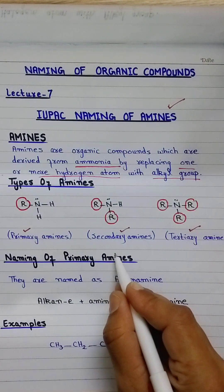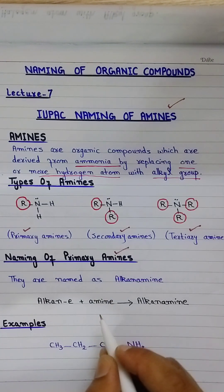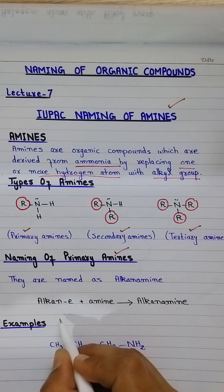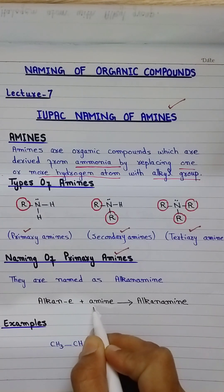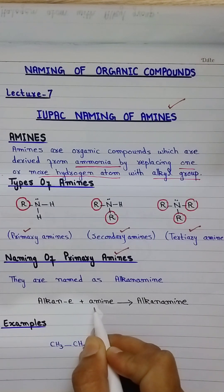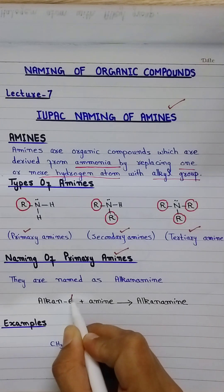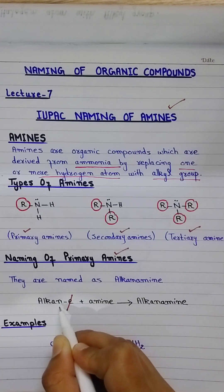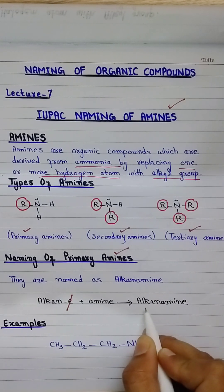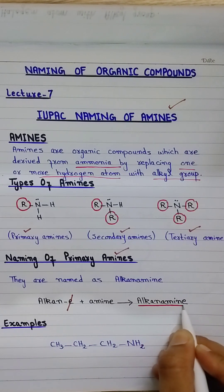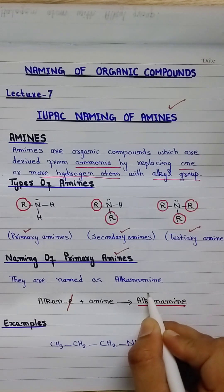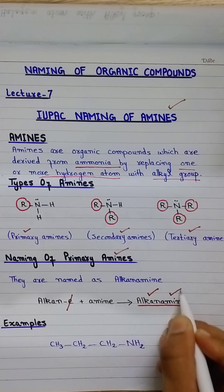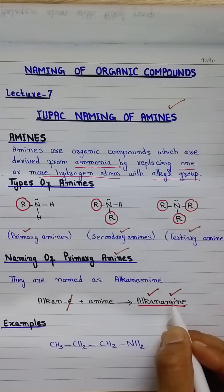Naming of primary amines: The IUPAC name is derived from the name of the corresponding alkane. The 'e' ending of the alkane is replaced by 'amine' as the functional group suffix. The carbon chain gives the first part of the name and 'amine' indicates the NH2 functional group.